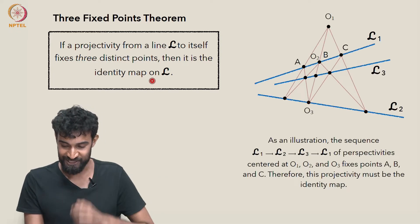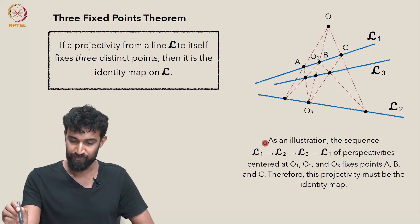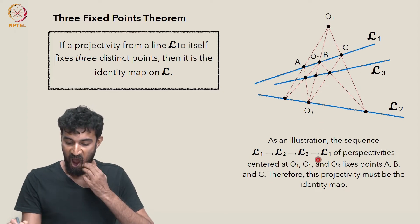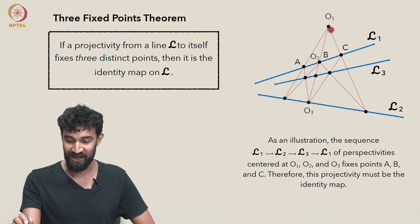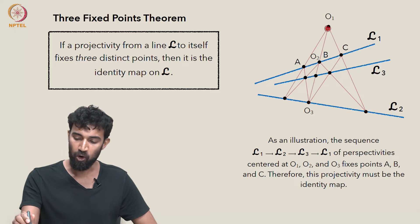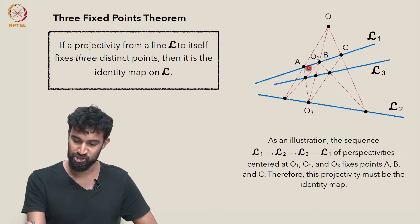As an illustration, the sequence of perspectivities from L₁ back to itself, given by O₁, O₂, and O₃, I've just constructed here a sequence which fixes three points A, B, and C. O₁ is going to send A to here, B to here, and C to here, so it's going to push A, B, and C to these three points in L₂.